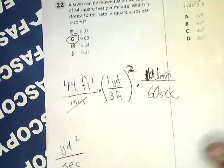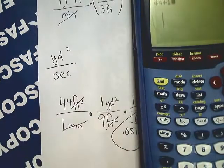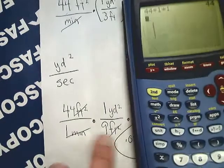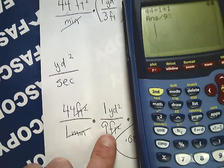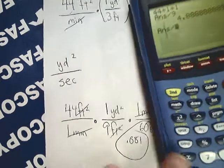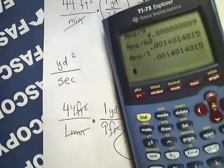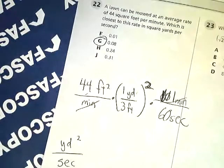I could also just do 44 times 1 times 1, not really necessary, and then make sure I divide by everything in the denominator. I can do that in a group, or I can do it individually. Same thing. And then I'll just go up here and pick G. So the answer to number 22 is G.